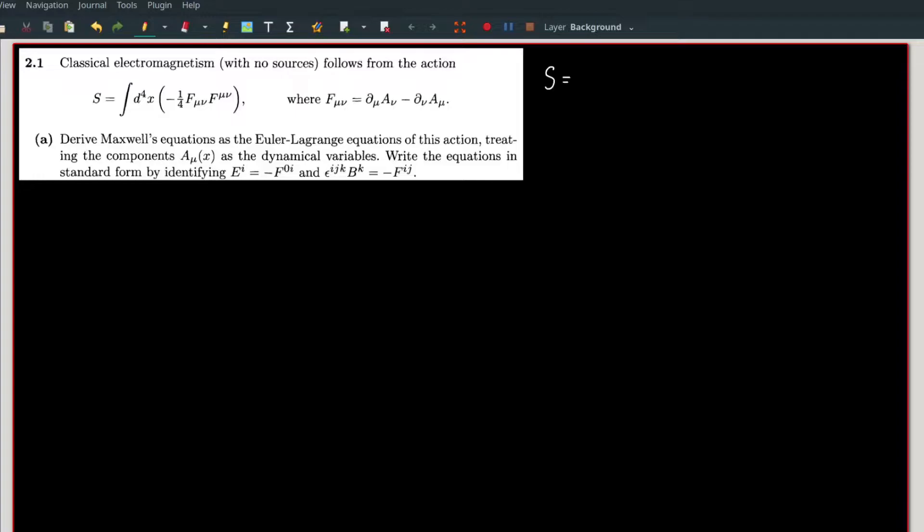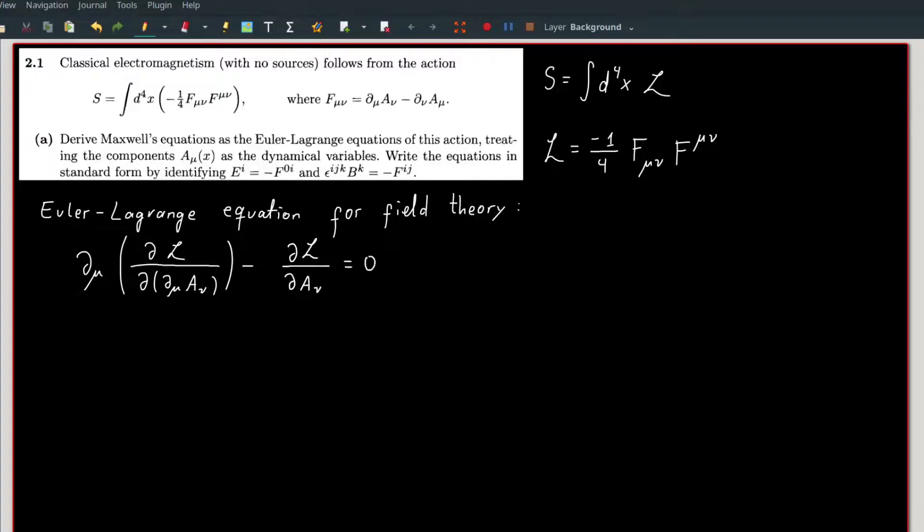Let us start from extracting the Lagrangian density denoted by script L by using the definition of the action that is the integral of the Lagrangian density over all spacetime. From here we can use the Euler-Lagrange equation for field theory, treating A as the dynamical variables.